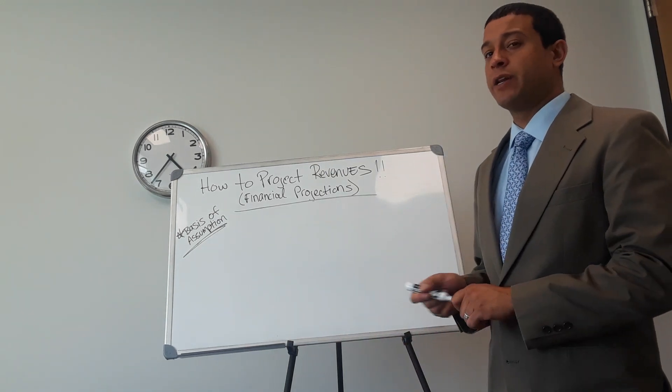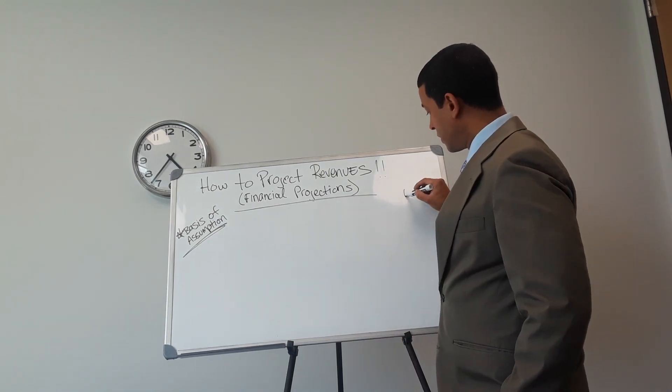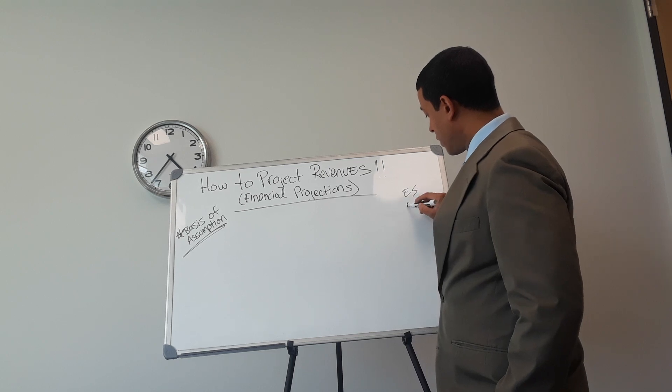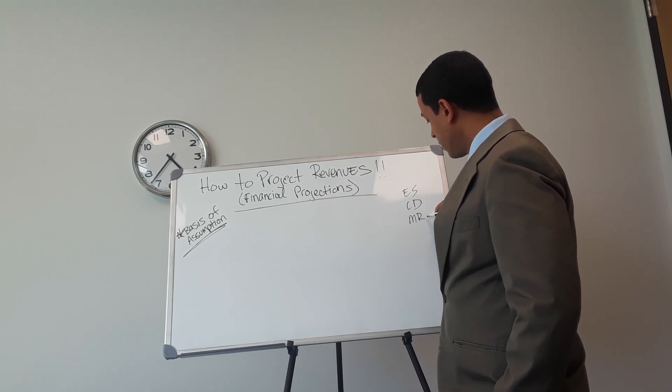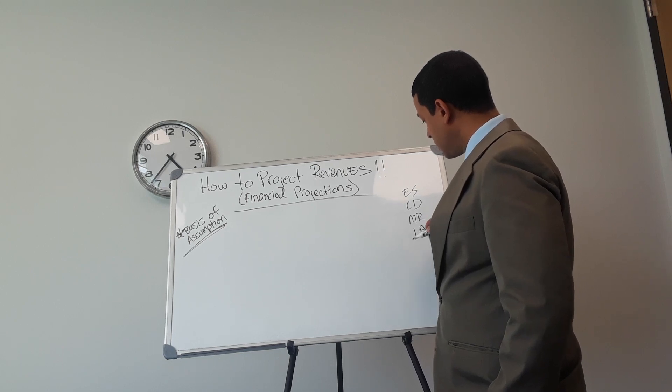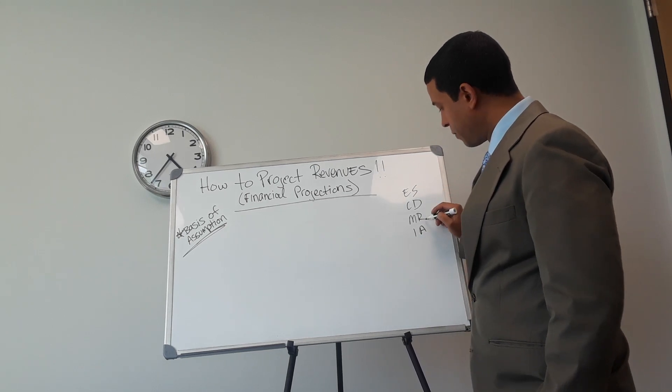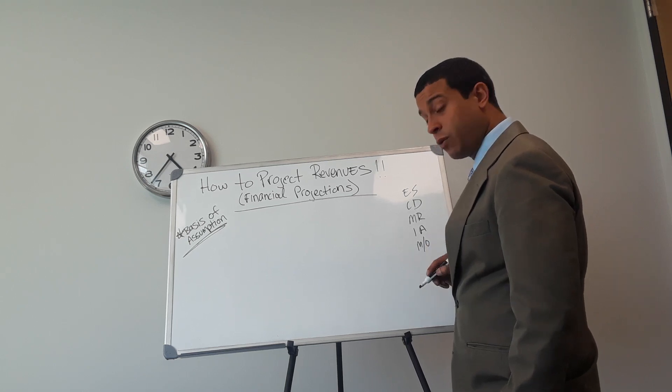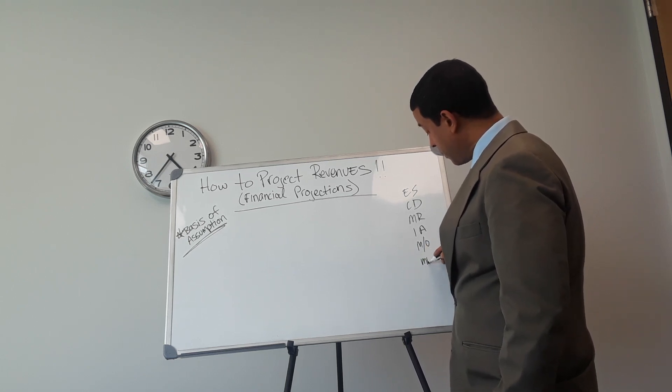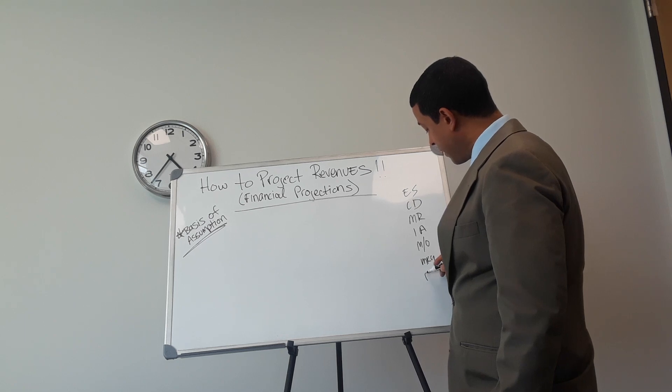If you ever did a business plan, you know that there's certain sections: the executive summary, your company description, your market research, your industry analysis, your management/organizational plan, your marketing plan, your financial projections, and your conclusion.